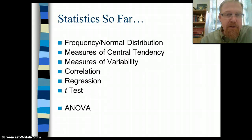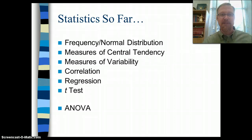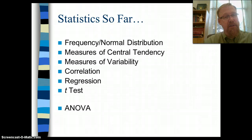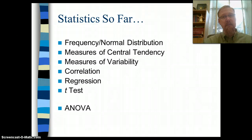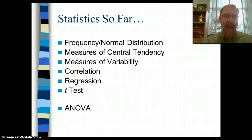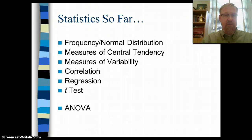In our research class so far, we've covered several different types of statistics. We've talked about the most basic kind — frequency and normal distribution. We've talked about measures of central tendency and measures of variability. We've talked about correlation and regression, and most recently we've talked about a t-test. With a t-test, we were interested in comparing the average, or the mean, for a particular continuous variable between two groups. We used the example of gender and math scores, where we were looking at the average math score between a group of boys and a group of girls to see if there was any statistically significant difference.